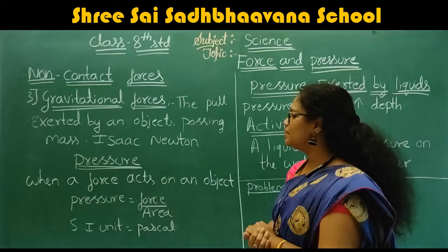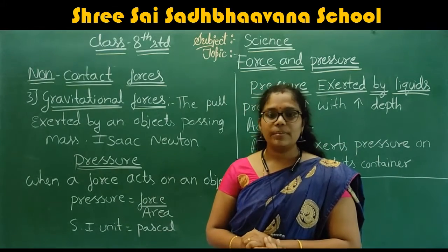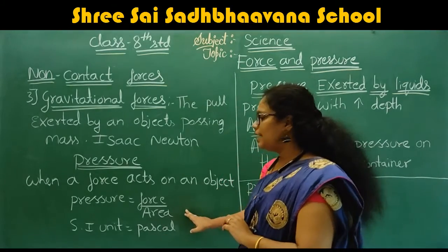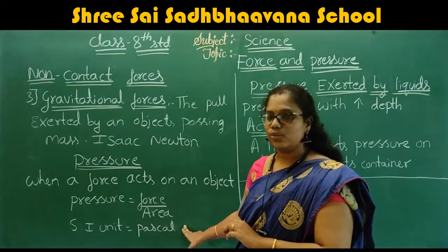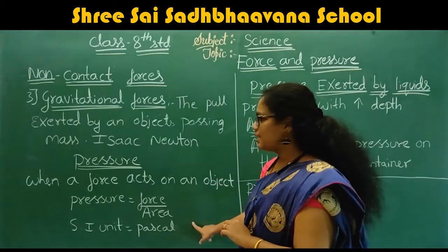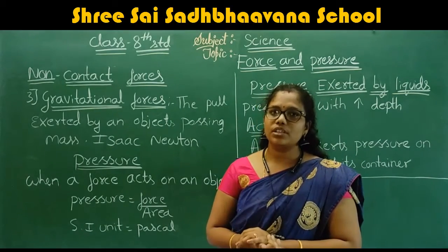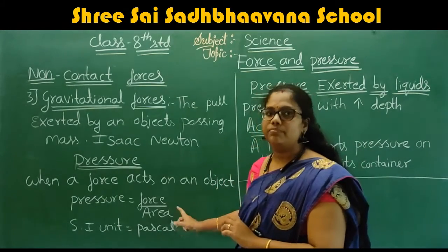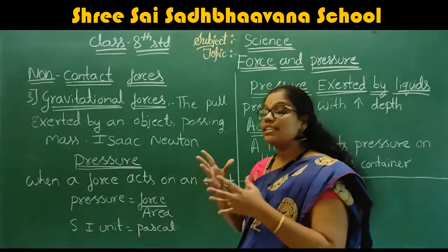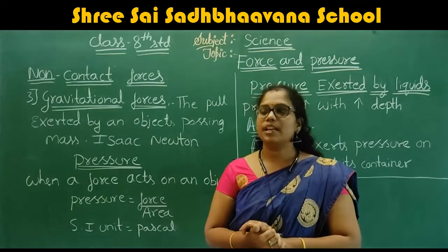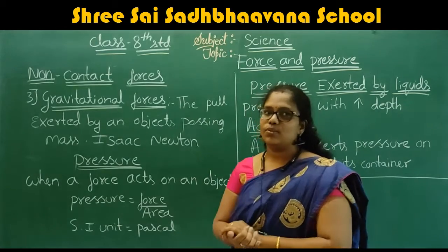The formula to find pressure is force divided by area. The SI unit of pressure is pascal — this is very important as it may be asked in exams. The definition of pressure: when a force acts on an object, the pressure created is called pressure. We have now completed non-contact forces, the definition of pressure, and the SI unit of pressure.